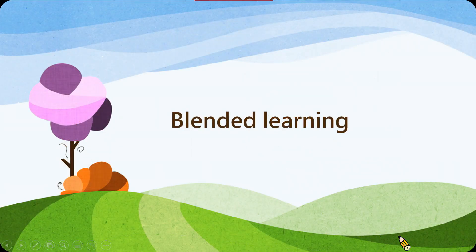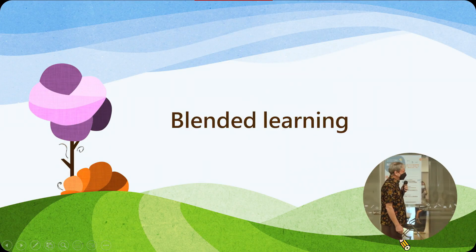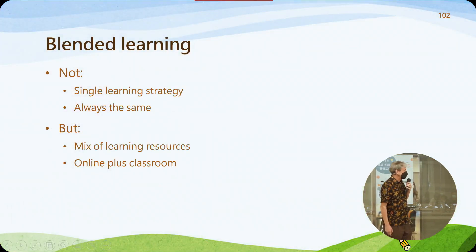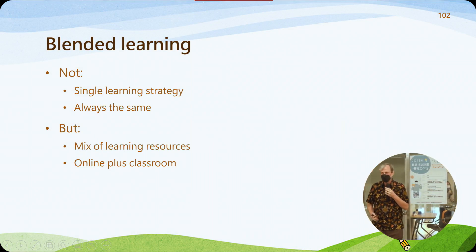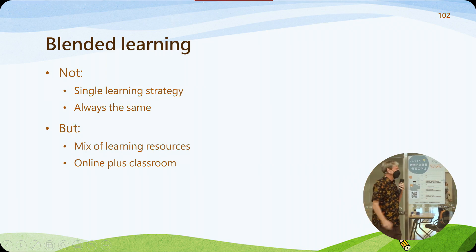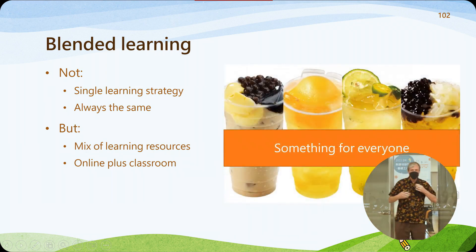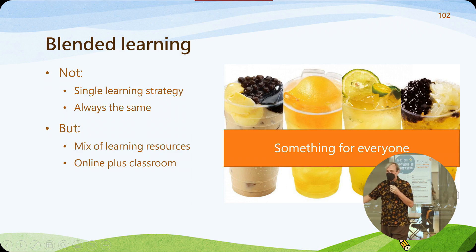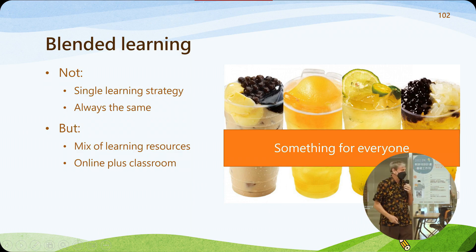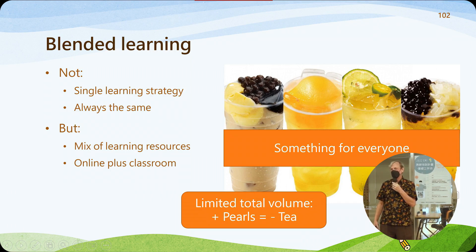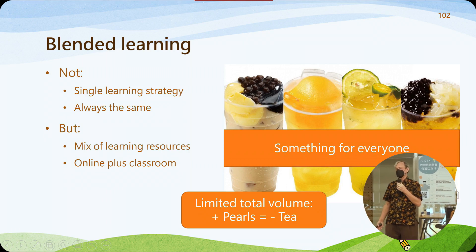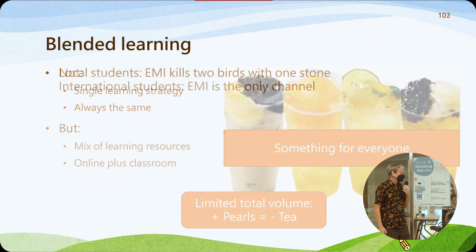One of the other things we both focus on is blended learning. Blended learning means you don't use just one strategy — you don't just lecture, you don't always do it the same way. You have a blend of online resources, textbook, class discussion, and various different ways of learning, so there's something for everybody. But if you add something, you have to take something away — there's a limited volume, you can't just keep adding. You have to have a balance.